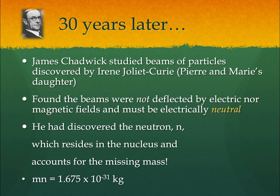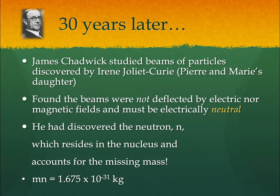We're still missing part of our mass. Thirty years later, James Chadwick studied beams of particles from Irene Curie and found the beams were not deflected by electric or magnetic fields the way the cathode ray beam was — meaning the beam had to be neutral. He discovered the neutron, our neutral particle in the nucleus, which has about the same mass as a proton but no charge. Now we have protons and neutrons in the nucleus, surrounded by negatively charged electrons. And until the next unit where we talk about Bohr, this is where we stop with our models of the atom.